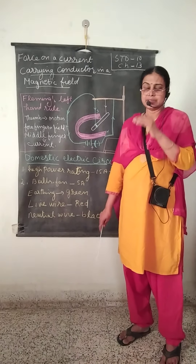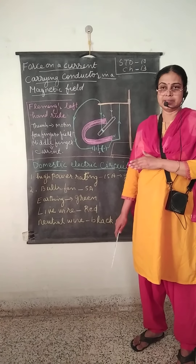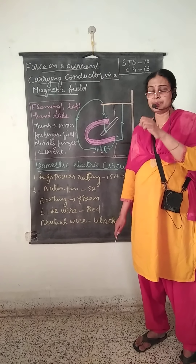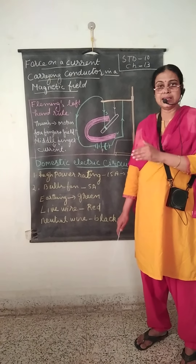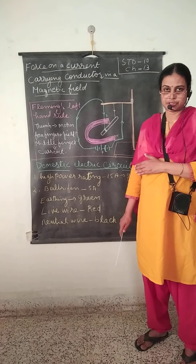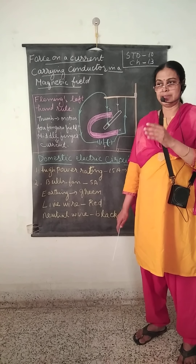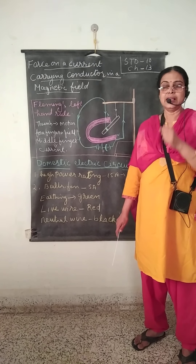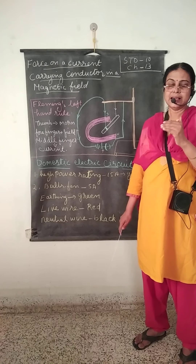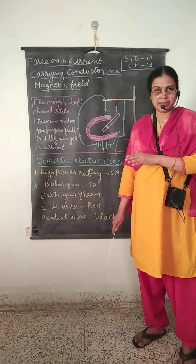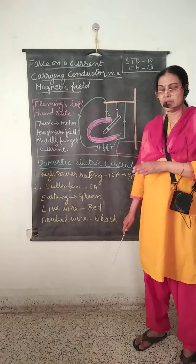Now, what is earthing? Suppose we are using an electric iron and a person comes in contact with that appliance. In case of any leakage, that person gets an electric shock. To avoid that, a metal plate is connected and buried under the soil so that if there is any leakage, the person handling the appliance will not get an electric shock, as electrons will flow deep down into the soil.